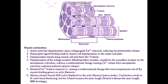Once depolarization reaches the t-tubule, it causes opening of the dihydropyridine receptor, which is a voltage-gated channel. That then activates the ryanodine receptor, because these two channels are mechanically linked. When the dihydropyridine receptor opens due to membrane depolarization, it automatically opens the ryanodine receptor as well, producing an increase in calcium release out of the sarcoplasmic reticulum — a process called calcium-induced calcium release.